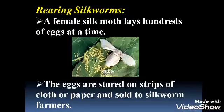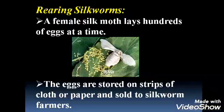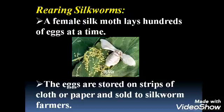The eggs are stored on strips of cloth or paper and sold to silkworm farmers. These eggs are collected and stored on paper or strips of cloth, and then sold to silkworm farmers.